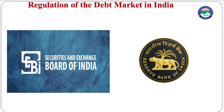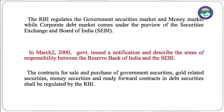Regulation of the debt market in India is carried out by two agencies: SEBI and RBI. The RBI regulates the government securities market and money market, while the corporate debt market — both public and private — comes under the control of SEBI. In March 2000, the government issued a notification describing the areas of responsibility between RBI and SEBI. Contracts for sale and purchase of government securities, gold-related securities, money market instruments, and repo contracts are regulated by the RBI, whereas such contracts executed on the stock exchange are regulated by SEBI, consistent with RBI guidelines.